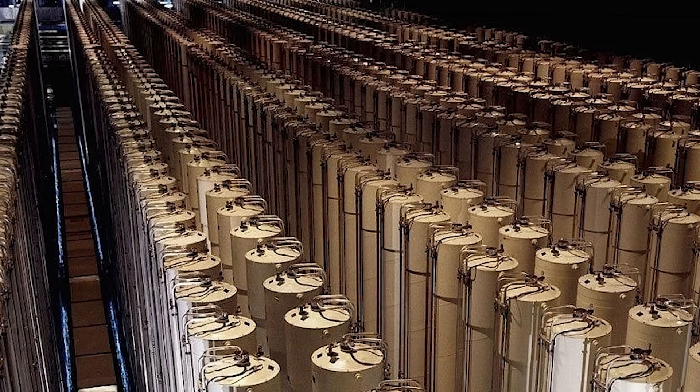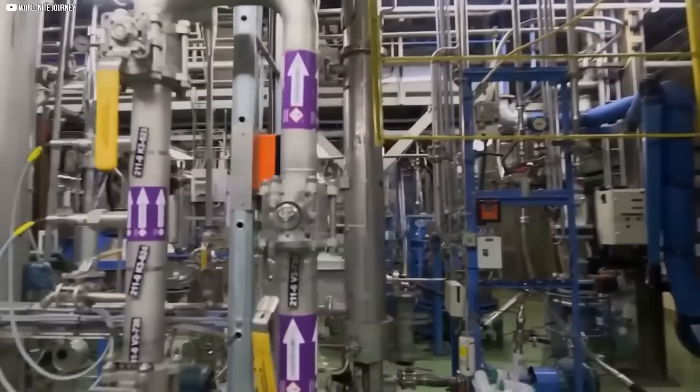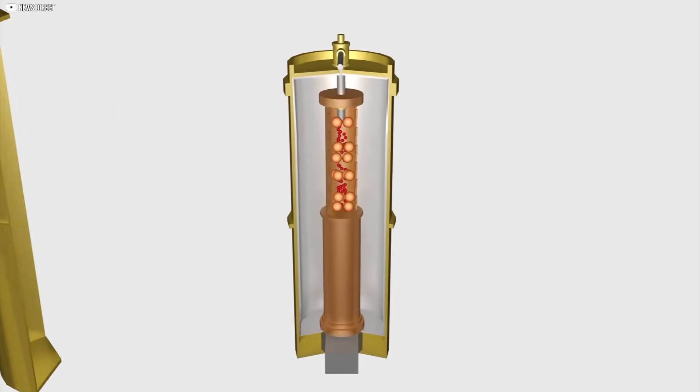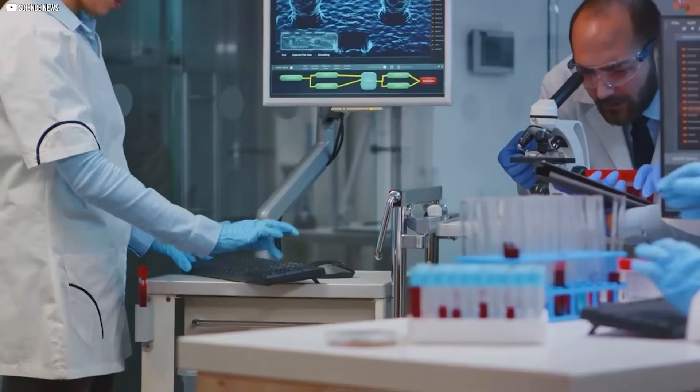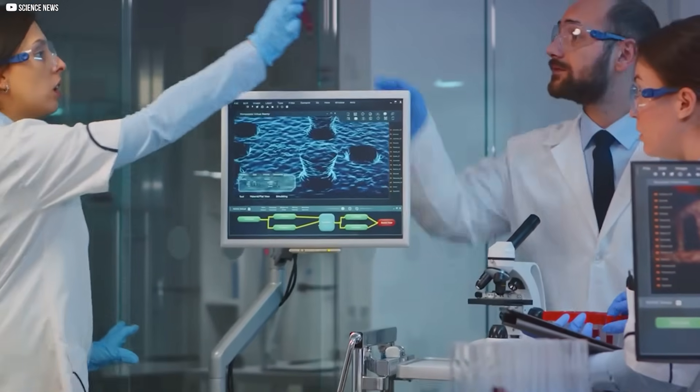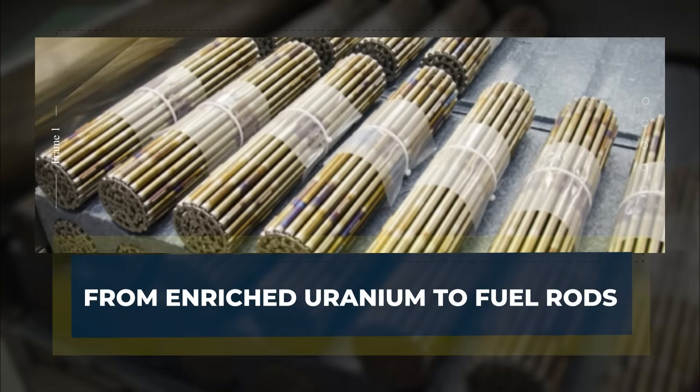Cascades of these centrifuges are used, with each machine gradually increasing the concentration of uranium-235. This method is far more efficient than older techniques, requiring less energy and space. Once enriched, uranium-235 is ready for use in nuclear reactors, where its fission generates energy, from enriched uranium to fuel rods.